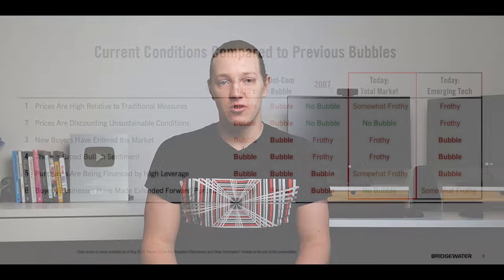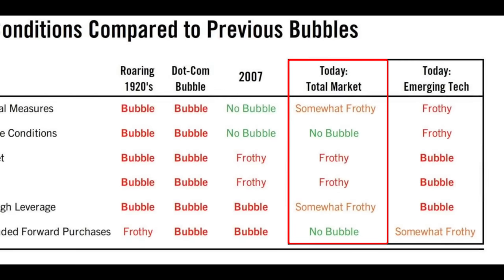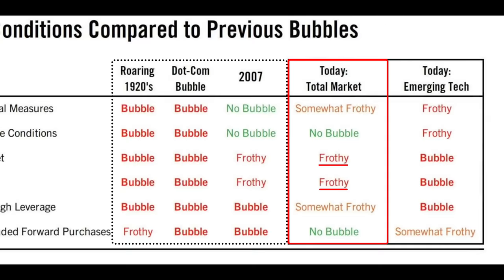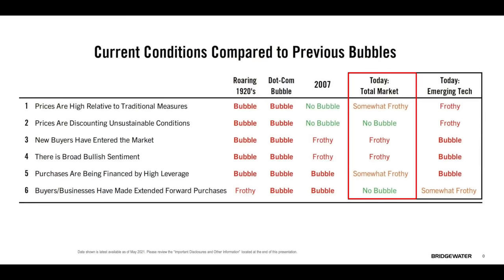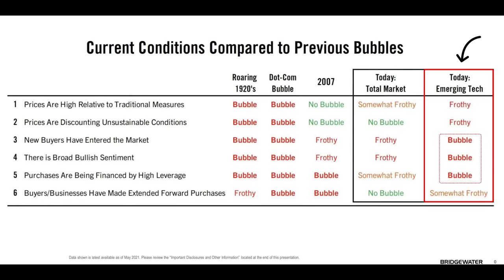Looking at Ray Dalio's conclusion across all these factors, he doesn't seem to think we're in bubble territory just yet. A few of these criteria are frothy in his mind, but comparing that to his conclusions from the previous three big crashes, he doesn't think we're in serious danger. Interestingly, he chose to include his conclusions on emerging tech — and in that space he indicates three out of six criteria are in bubble stage. Reading between the lines, Ray seems to be saying the broader market is not in imminent danger, but watch out for emerging tech.